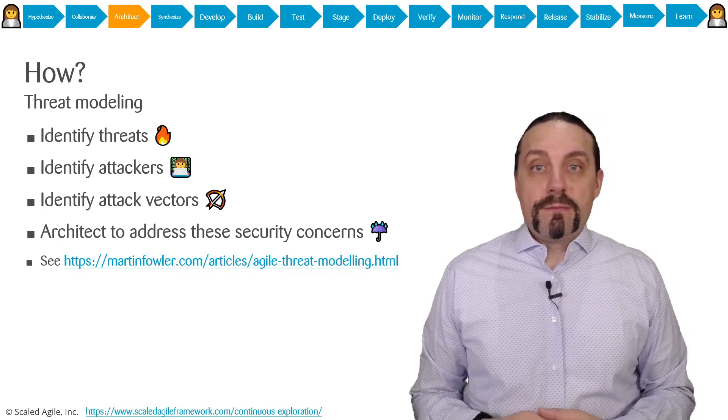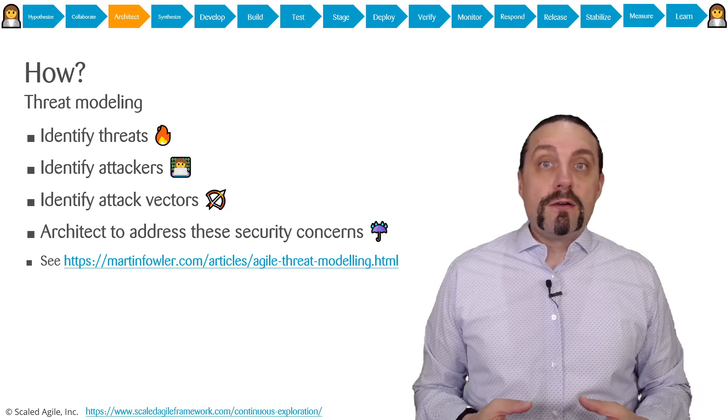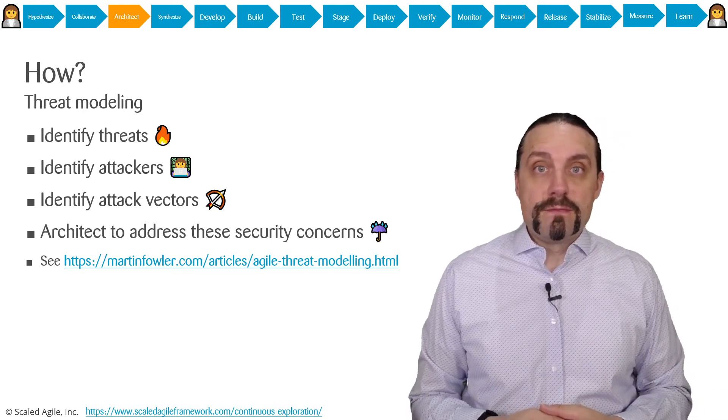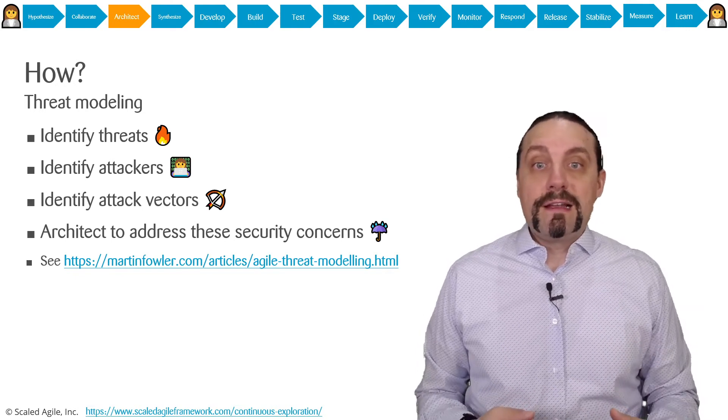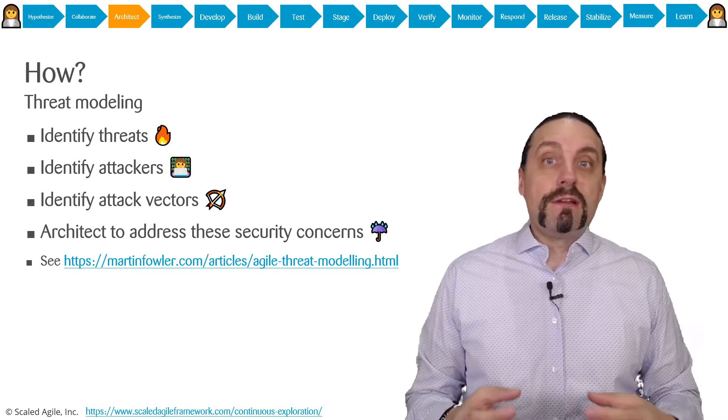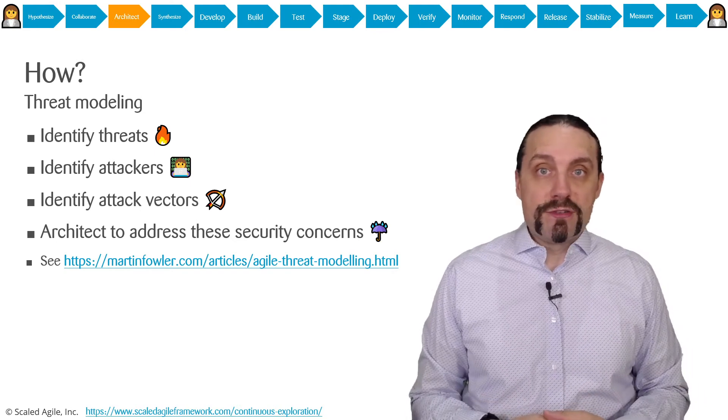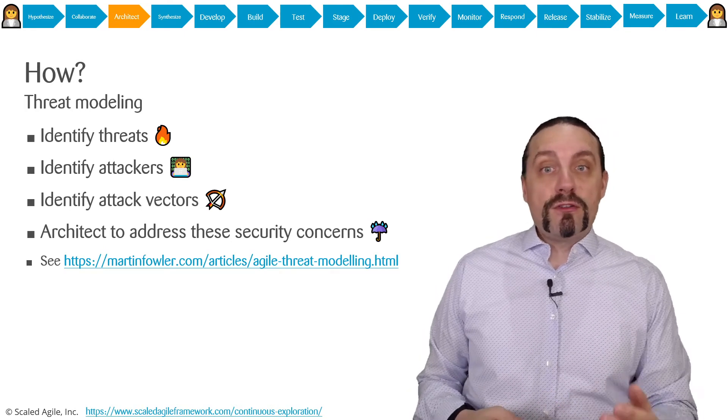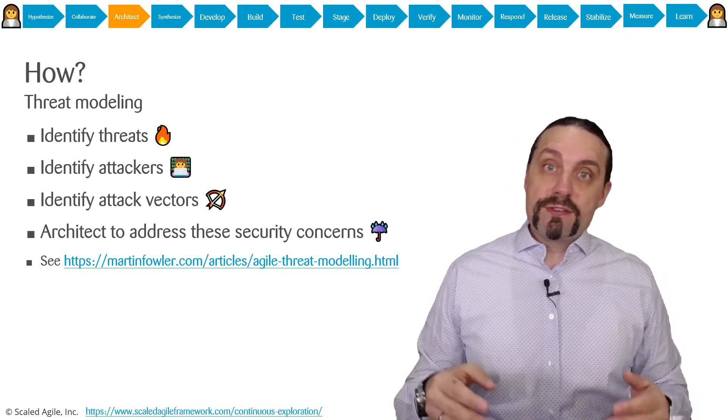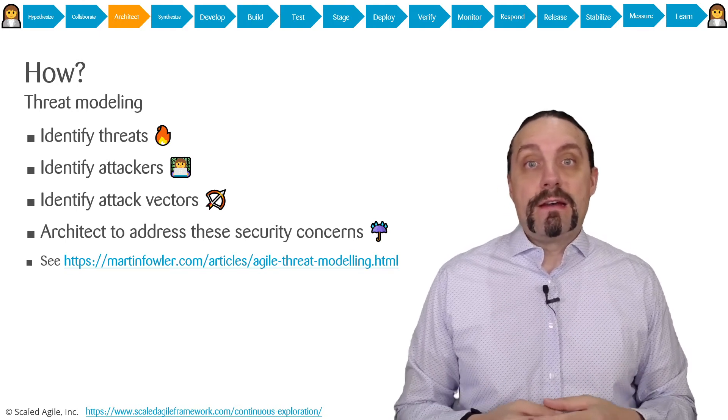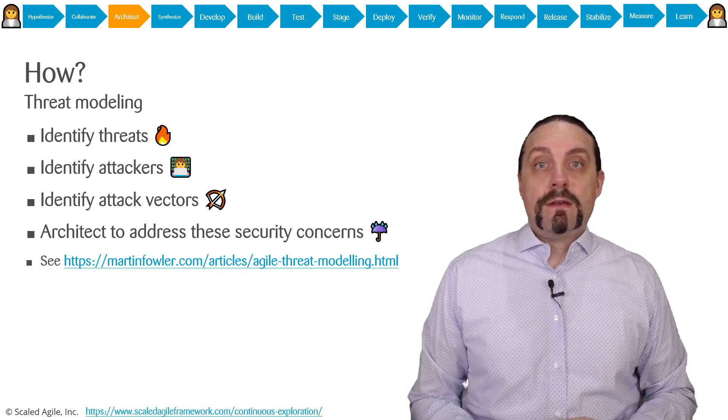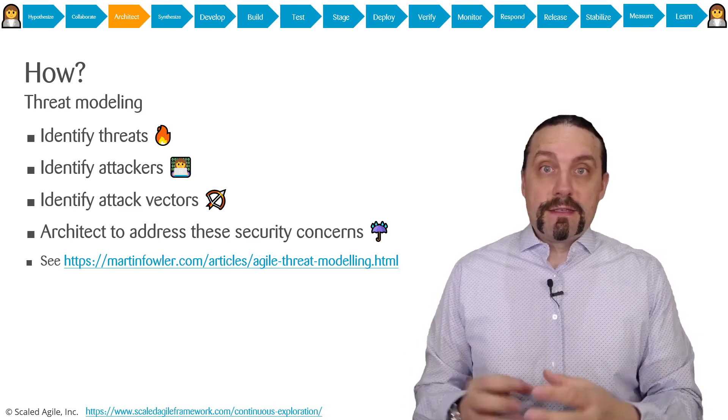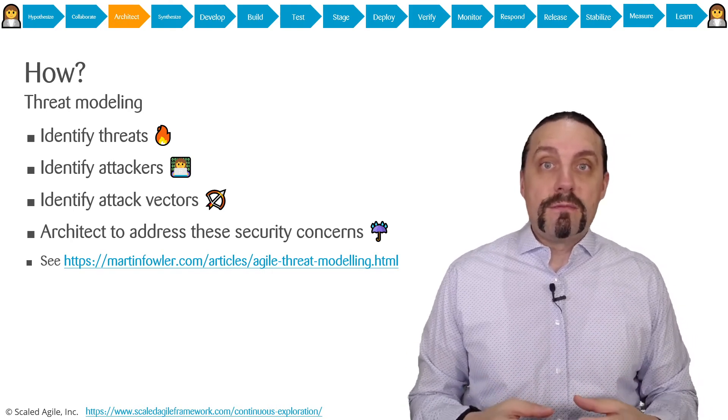You do threat modeling by first identifying all the threats that can come into play with your application. Then you analyze what are the potential attackers. After that, you analyze what are the potential attack vectors that these attackers can use. After you've done that, you address these security concerns you've come up with.